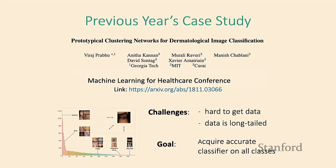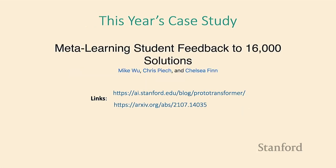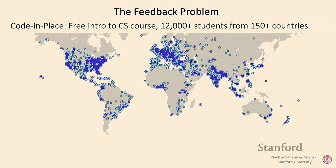Now for a case study of using this algorithm in practice — an example in education. The course 'Code in Place' (similar to Shelter in Place) was a free Intro to Computer Science course. In its second iteration, it had more than 12,000 students from more than 150 countries. They gave a diagnostic exam and wanted to give feedback on it. Giving feedback on all student submissions was estimated to take more than eight months manually.